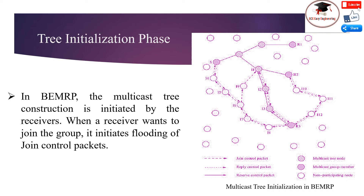In the Tree Initialization Phase of BEMRP, the multicast tree construction is initiated by the receiver. When a receiver wants to join the group, it initiates flooding of a join control packet. The existing members of the multicast tree, on receiving these packets, respond with reply packets. When a new receiver R3 wants to join the multicast group, it floods the join control packet.